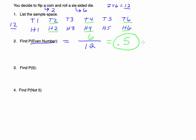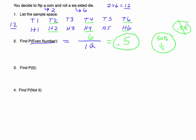We could also express this as a percent. To change a probability into a percent, move the decimal point two places to the right, so 0.5 becomes fifty percent. As a reduced fraction, it would be one-half. A common mistake is writing 0.5 percent — that is not correct. It's either 0.5 as a probability or fifty percent.